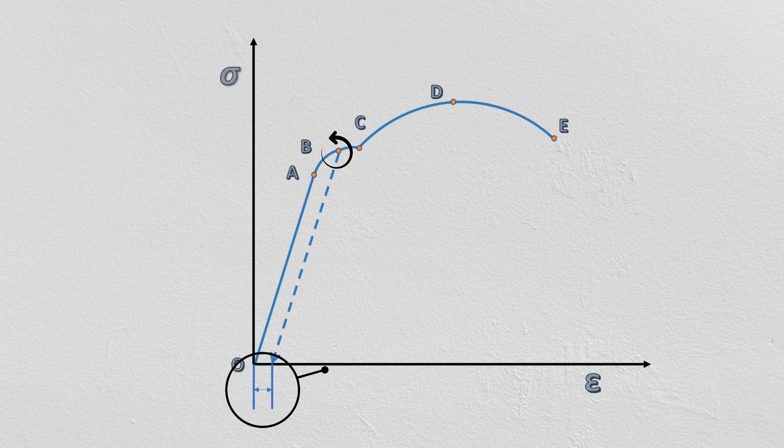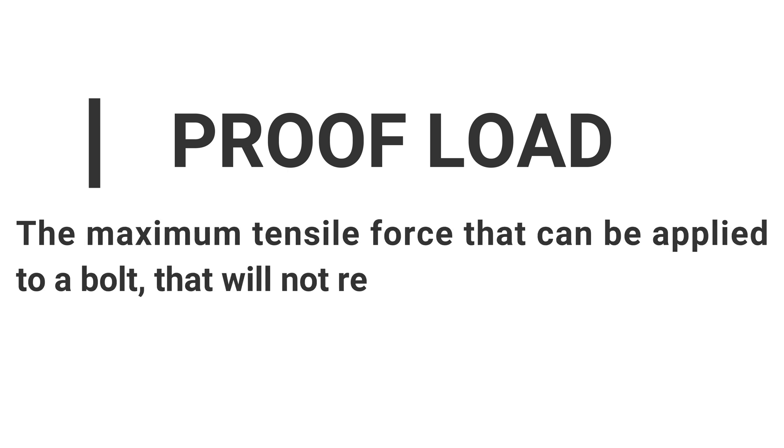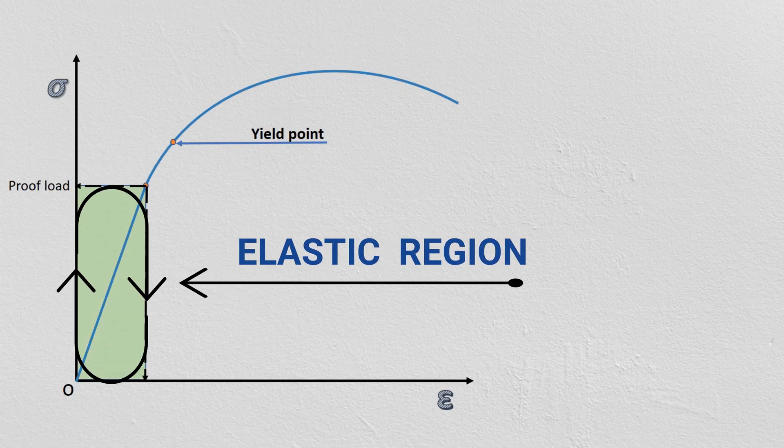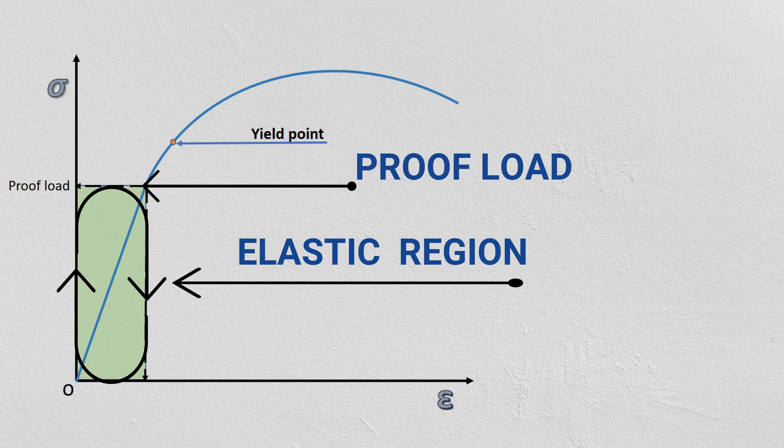Proof load is defined as the maximum tensile force that can be applied to a bolt that will not result in plastic deformation. In other words, the material must remain in its elastic region when loaded up to its proof load.